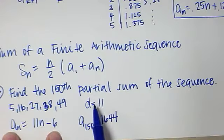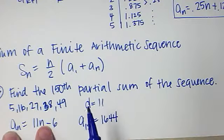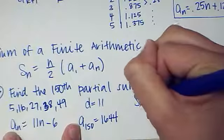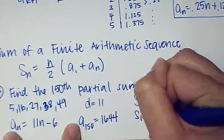So, I need to find A sub 150, which is 150 times 11 minus 6, and that would be 1644. And you just use your calculator to do that, 150 times 11 minus 6. So, steps: I found my common difference, I found my sequence, I found my 150th term of my sequence, and then I plug it into the S sub N formula, or S sub 150.